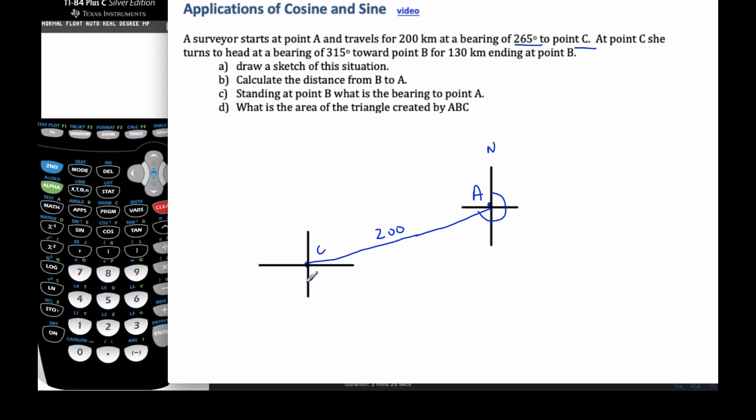This is 90, 180. Here's 270. So 315 is somewhere over here. So I start to head off in this direction. Oh, maybe if I use my colors, I can draw a straight line in this direction. 315 degrees for 130. So I need to go for 130 to point B. So this is point B.